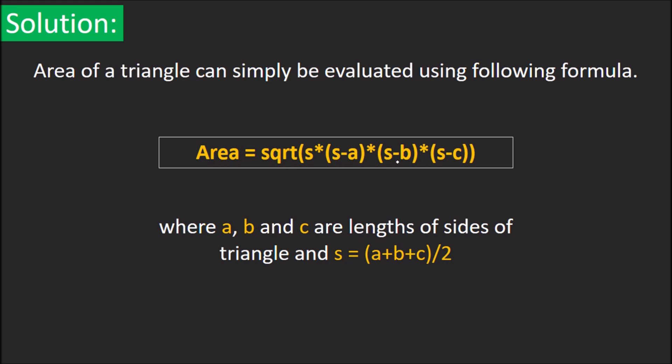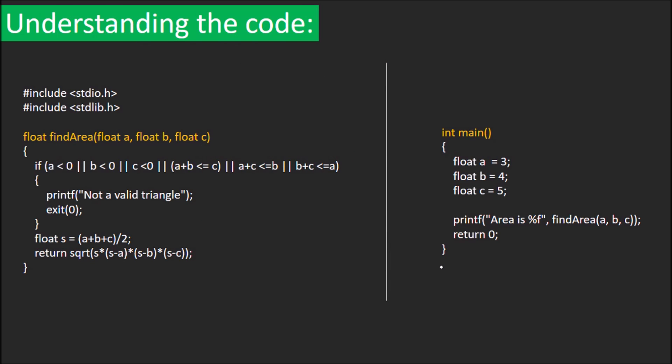times (s-a) times (s-b) times (s-c), where a, b, and c are the lengths of the sides of the triangle, and s is the semi-perimeter which equals (a+b+c)/2. Let's see the code now.